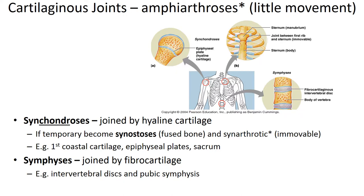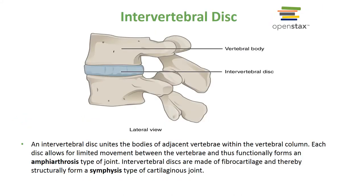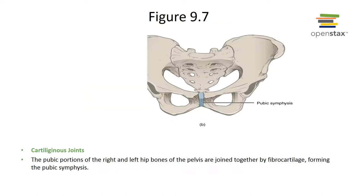Symphysis is where articulating bones are separated by a wedge or pad of fibrocartilage. The articulation between the vertebrae, where a thick pad of fibrocartilage forms the intervertebral disc, is a common example. The pubic symphysis is another example of this type of joint. Here you can see the intervertebral disc and the pubic symphysis as representative examples.